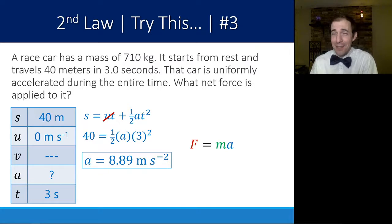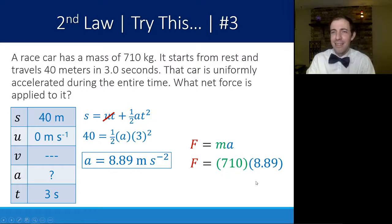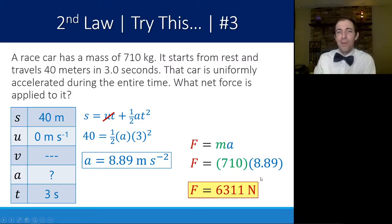Now that I have acceleration, and I always had mass, I can find the net force. Net force is related to both of these. If I wanted to have the race car go faster, have a higher acceleration, I would need more net force. But since this is the acceleration here, I can plug that in. 710 times 8.89 will give me a net force of 6,311 Newtons.